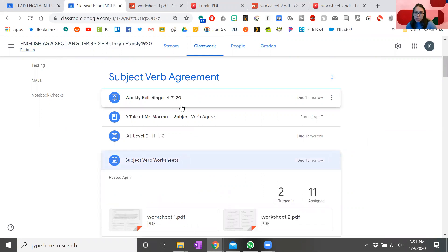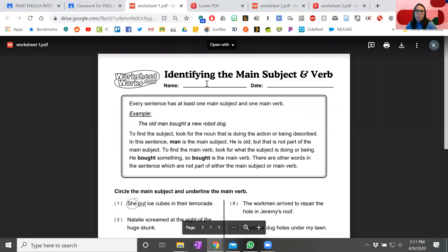So hopefully you've already done the bell ringer, you've already watched the video, but you could do the IXL first or you could do the subject verb one first. It's up to you which one you want to do. If you get stuck on one, try the other. So I noticed some people having trouble with this assignment.